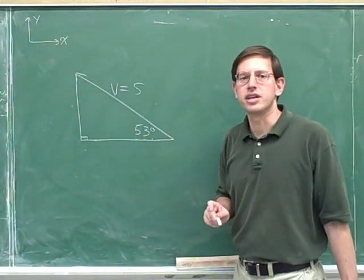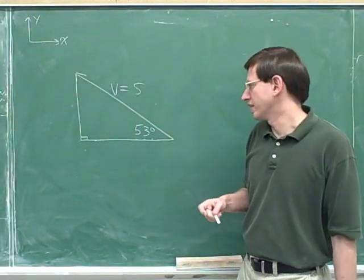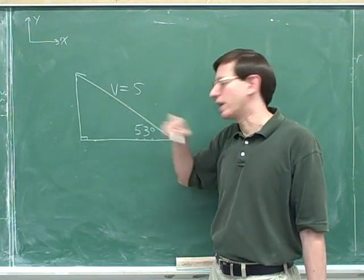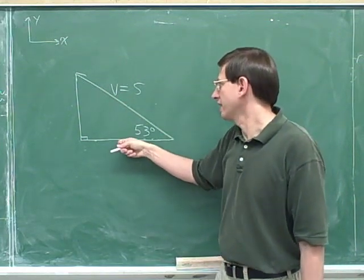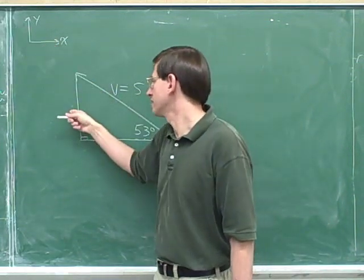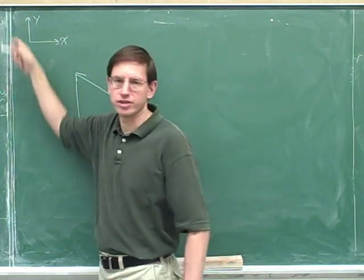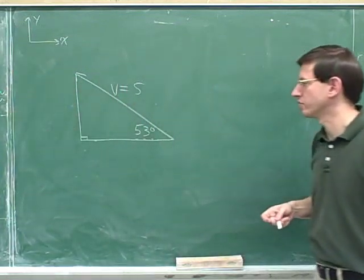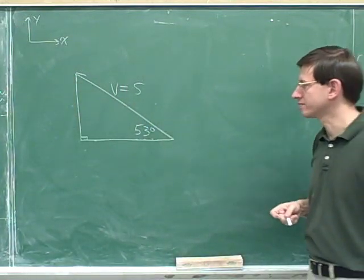This is the right triangle: the overall vector is the hypotenuse, this leg is parallel to the x-axis, and this leg is parallel to the y-axis. So that's the triangle that we were trying to draw.